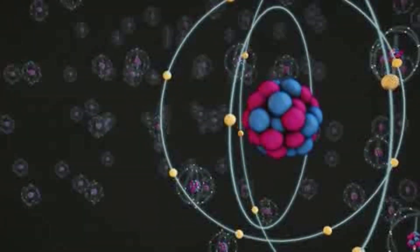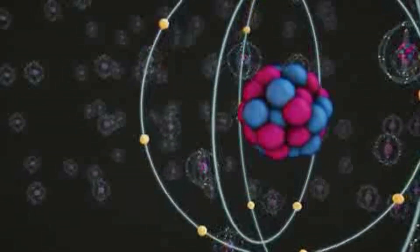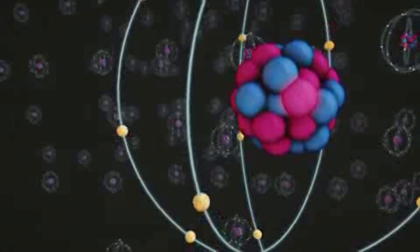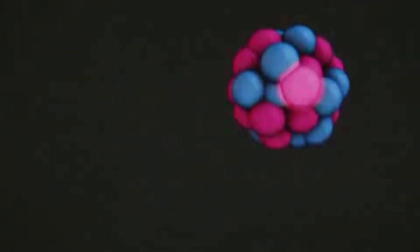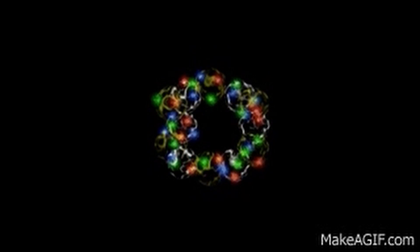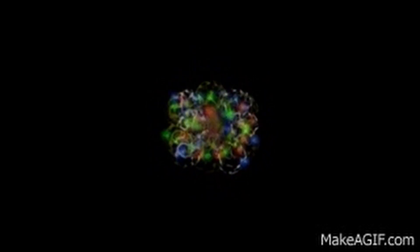In Bohmian mechanics, the wave function evolves according to Schrödinger's equation, just as in other interpretations of quantum mechanics. However, in addition to this wave function, particles follow precise trajectories determined by a guiding equation.